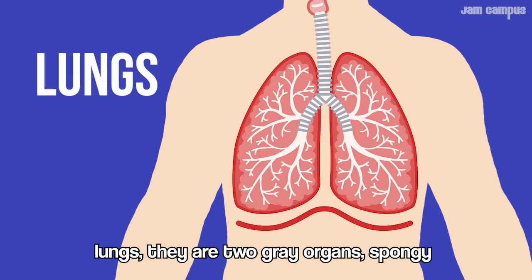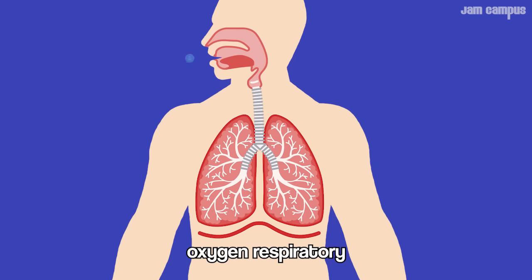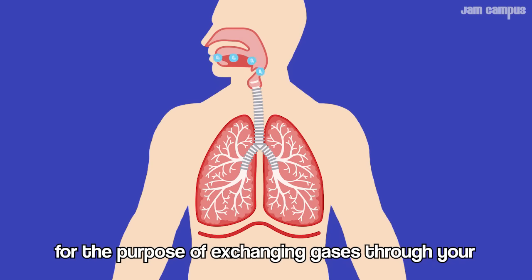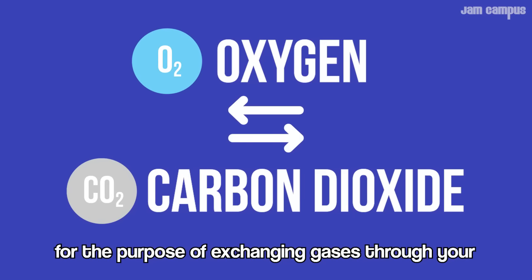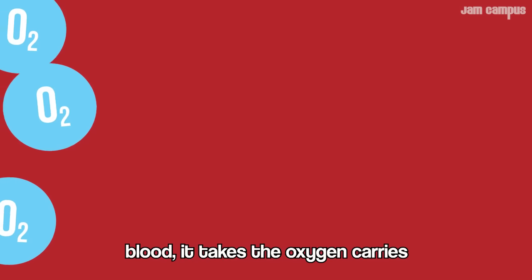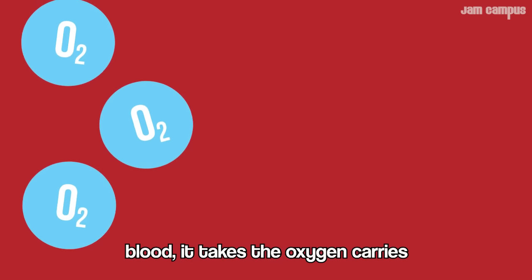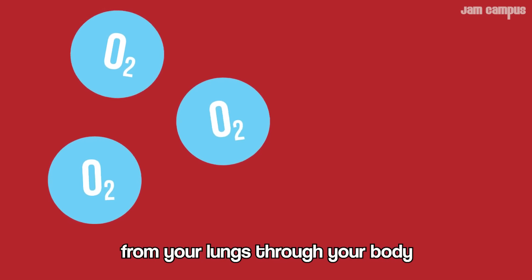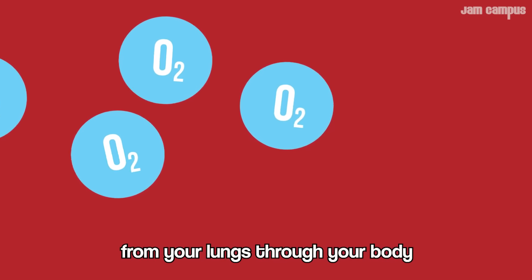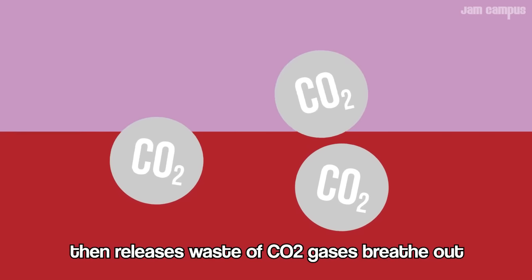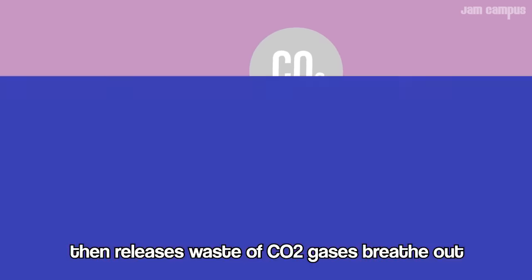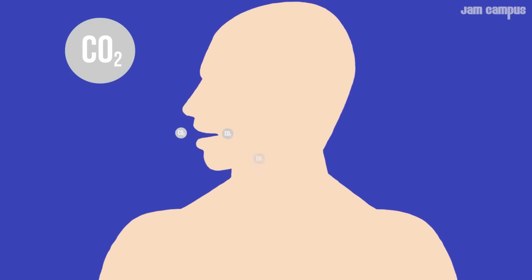Lungs, they are two gray organs, spongy. Oxygen, respiratory, for the purpose of exchanging gases through your blood, because the oxygen carries from your lung through your body, then releases waste of CO2 gases — breathe out!